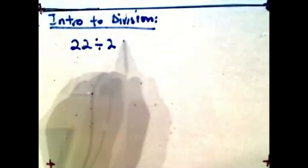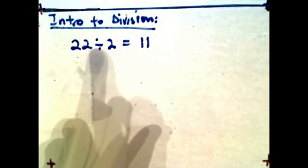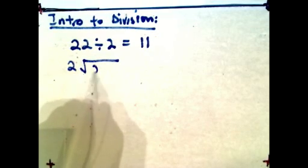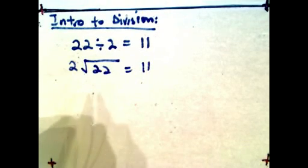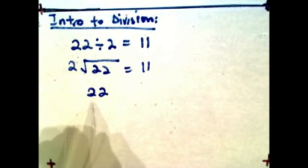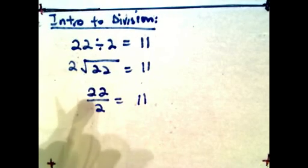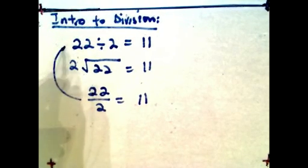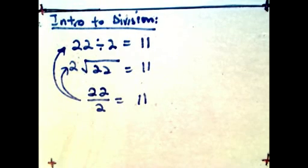Now we're moving to division. Division is a little bit different from other operations in that it can be expressed in various ways. For example, you might have seen division this way: 22 divided by 2, which equals 11. Or you might have seen it as 2 divided into 22, which is 11. Or even as a fraction: 22 over 2 is also 11. So it can be expressed in terms of fraction or ratio, similar to these symbols here.